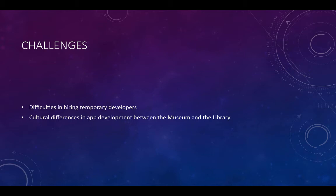Cultural differences in app development between the museum and the library — and even within the library. One of the things I've done in my two years there is instantiate more of a versioning process: prototypes, alphas, betas, etc. Getting concrete specs from stakeholders has been a process. The museum doesn't do any application development, so it's been a process with them too. As a result, we have a working prototype for the application now, but due to some feedback we're getting, we're actually going back to prototype and building a new prototype.